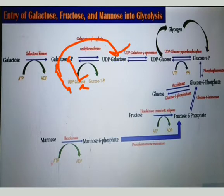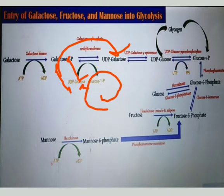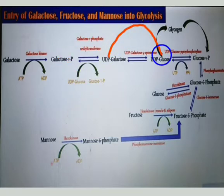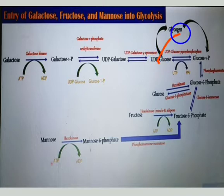UDP-glucose is converted into glucose-1-phosphate, and galactose-1-phosphate is converted to UDP-galactose. Next, UDP-galactose is converted into UDP-glucose by the help of the enzyme UDP-galactose-4-epimerase. Then UDP-glucose is converted into glucose-1-phosphate by the help of the enzyme UDP-glucose pyrophosphorylase.